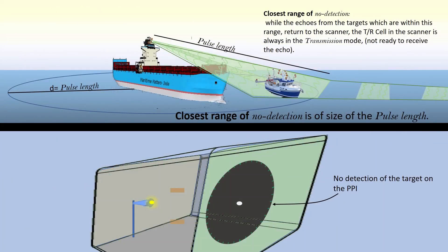Depending on the size of the pulse length as set by the operator of the radar, there is a closest range of no detection for every radar. While the echoes from the target which are within this range return to the scanner, the transmission reception cell inside the scanner is always in the transmission mode, not ready to receive the echo.